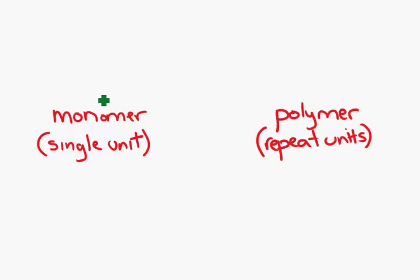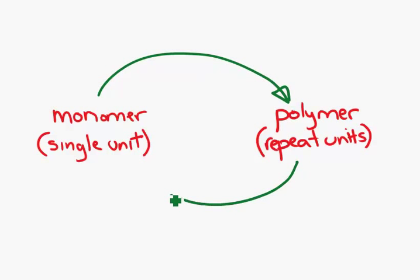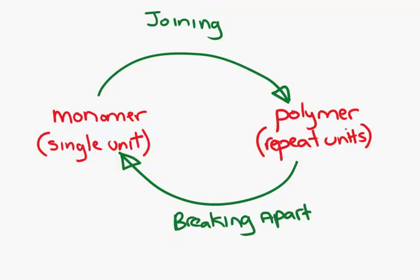So basically what we're saying is how do we get from here to here? We know your body makes large polymers by joining together monomers, while here we are breaking apart. These processes have names.